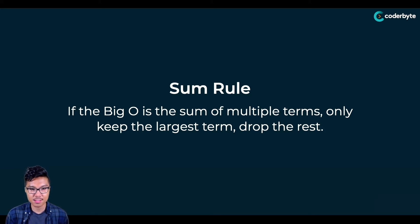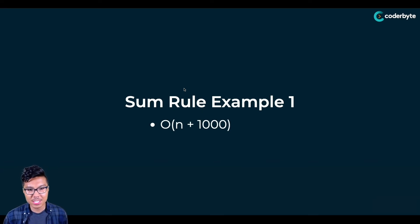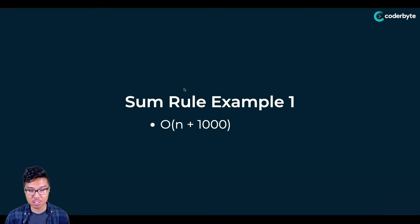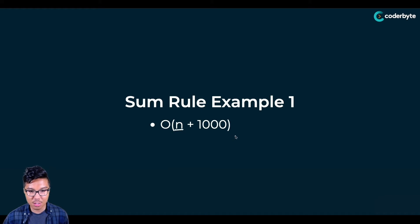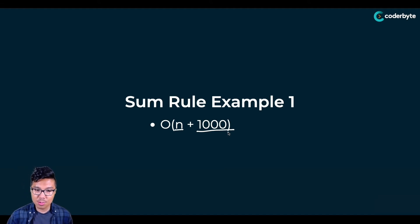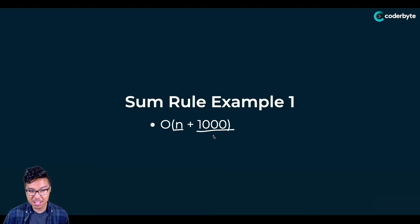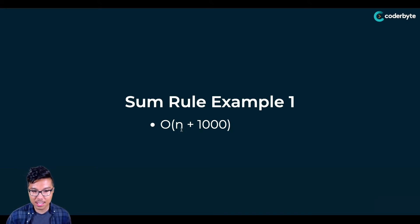Let's step through some examples. Given an unsimplified Big O of O of n plus 1000, according to our sum rule, we choose the biggest term. We only have two different terms: the n term and the 1000 term. Among these two, I choose the one that's bigger in terms of n. This 1000 is actually not that big because it's just a constant value — it doesn't depend on the size of n. So n is going to be the winner, which means our Big O complexity is just O of n.